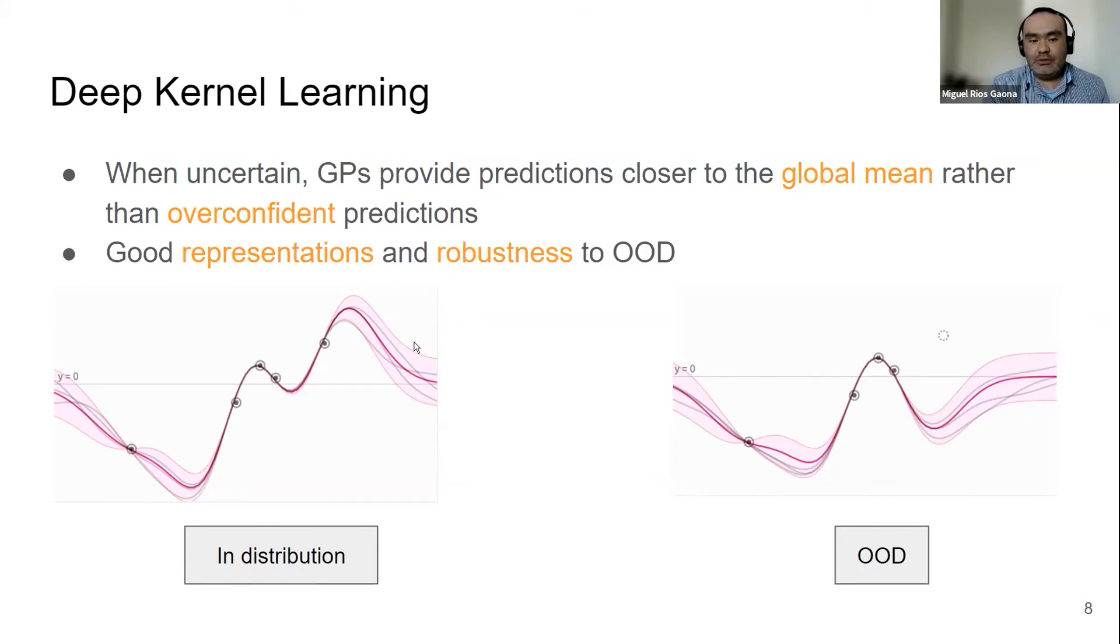Like we saw before, when we are in distribution, the model is going to have low variance, low uncertainty. And when it's out of distribution, the model is going to have less extreme predictions, it's going to have higher uncertainty.